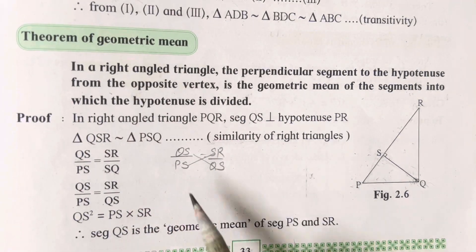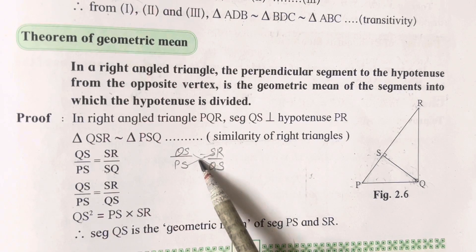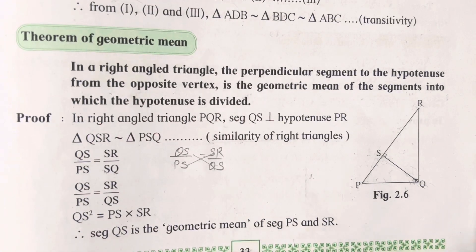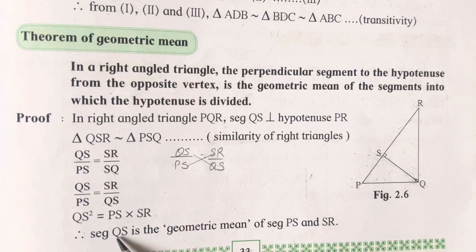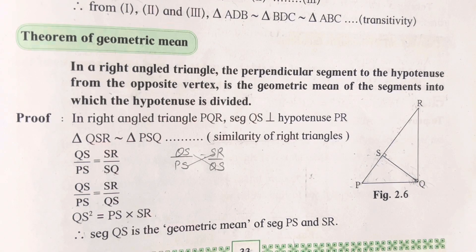After this, when you have written this, that means you have to cross multiply it. When you cross multiply, QS will become QS squared, and PS into SR. It's simple. Therefore, segment QS is the geometric mean of segments PS and SR.